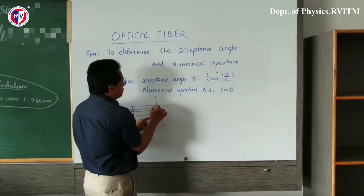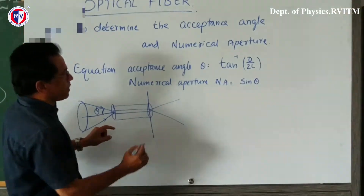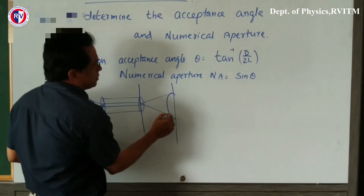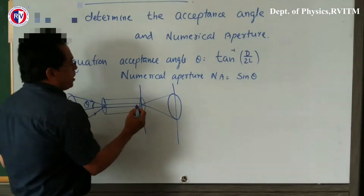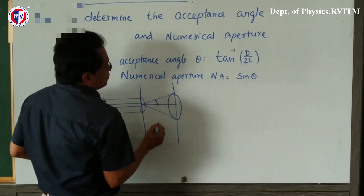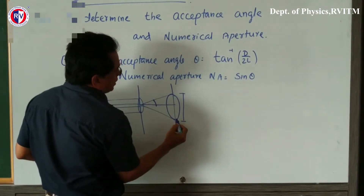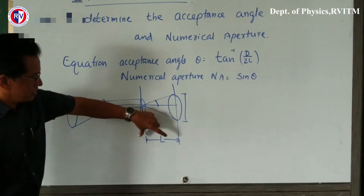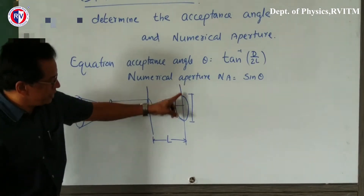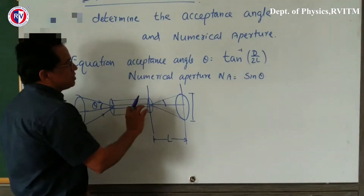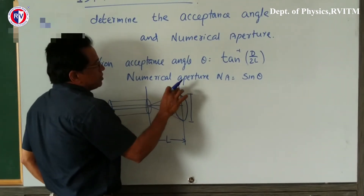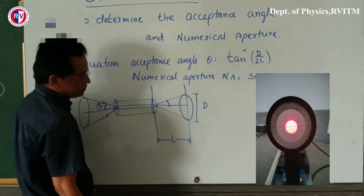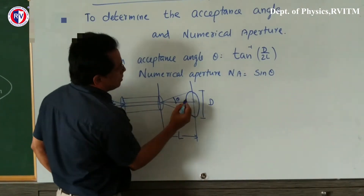If you have the end of the optical fiber cable here, and at some distance you keep a screen, on the screen you will get a spot of light. At that point, this is the angle we have to measure. If I measure the diameter of this spot of light — keeping the screen at a specific distance — when we collect the radiation falling on the screen, we get a circular spot. We measure this total diameter as D.